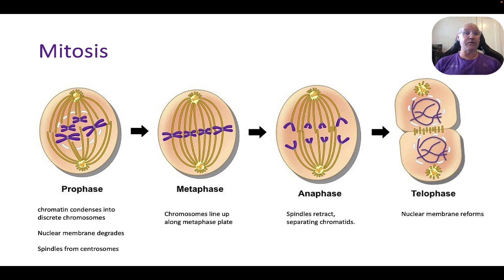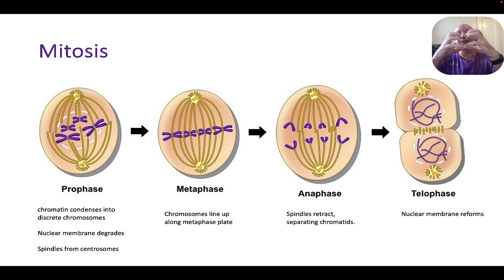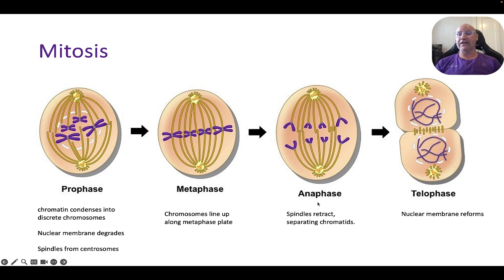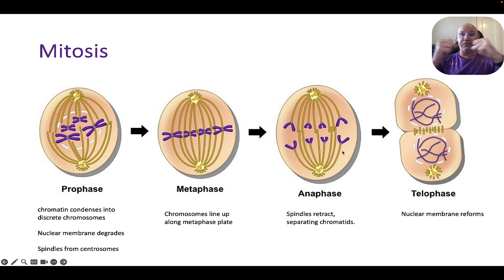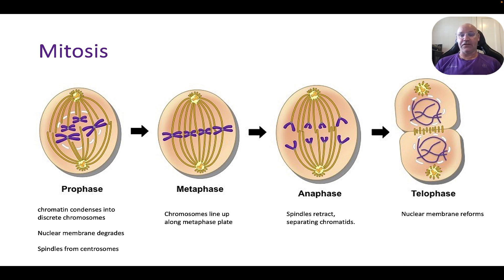As a recap: mitosis is the process of separation of chromatids prior to cell division in somatic cells. There are four steps: prophase, metaphase, anaphase, and telophase. In prophase, chromosomes condense and spindles attach. In metaphase, they line up across the metaphase plate. In anaphase, the spindles retract pulling the chromatids apart. In telophase, the nuclear membrane reforms. After that comes cytokinesis — the actual cell division. That's mitosis for somatic cells.